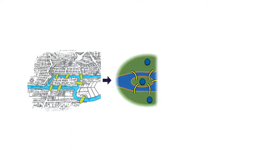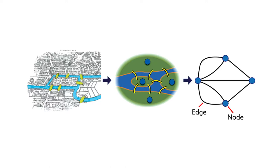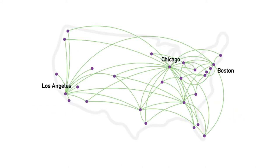Network science takes highly complex systems and breaks them down into their most fundamental parts — nodes, which represent the distinct actors within a system, and edges, which form the connections between nodes. Taking the U.S. airline system as an example, nodes can be used to denote each major airport, while edges represent the connecting air routes.